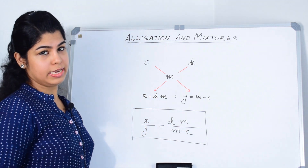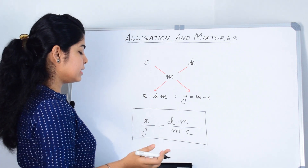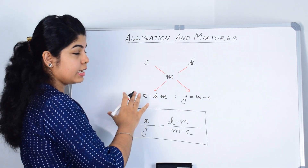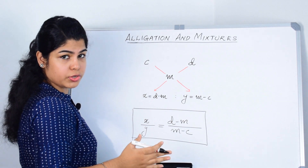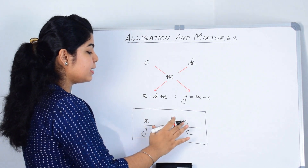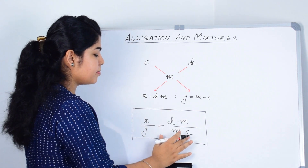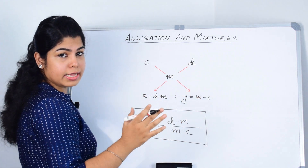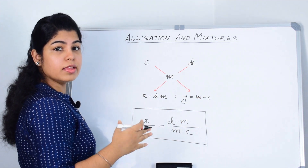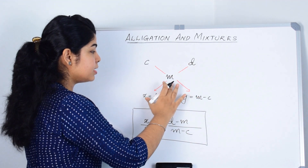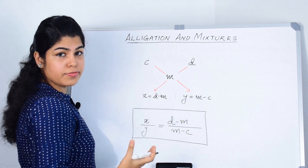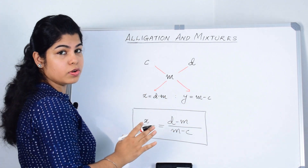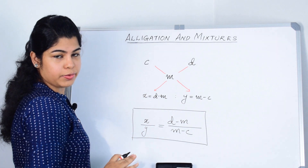What is rule of allegation? Rule of allegation says that the ratio in which two types of ingredients are mixed together is equal to D minus M divided by M minus C. Where D is the dearer value or the bigger value, M is the mean value or mean price, and C is the cheaper price or smaller value.